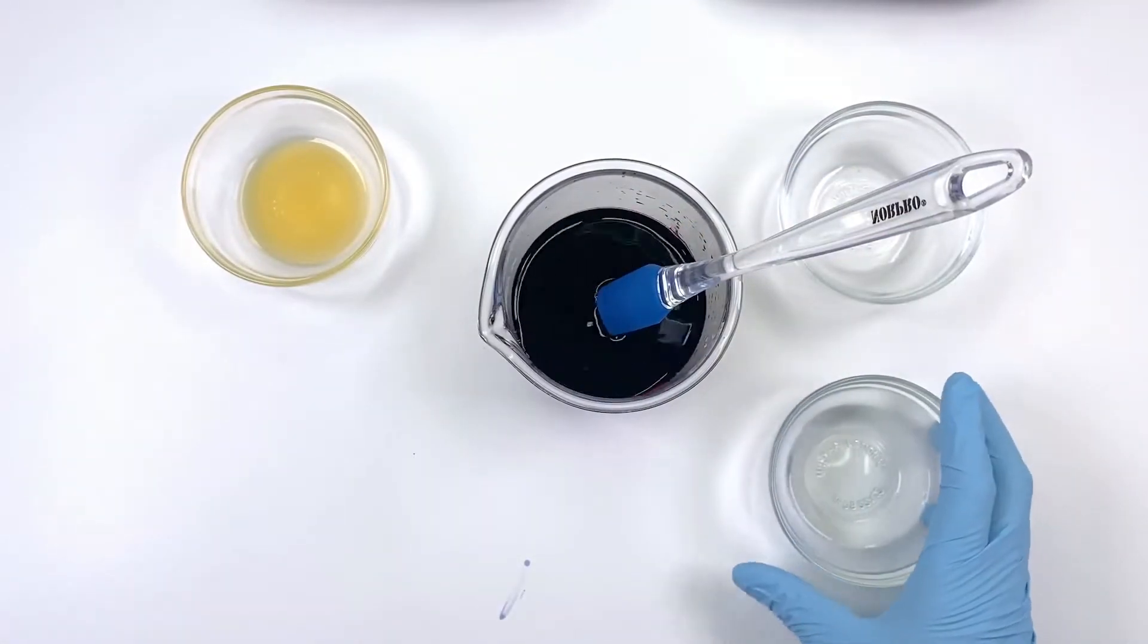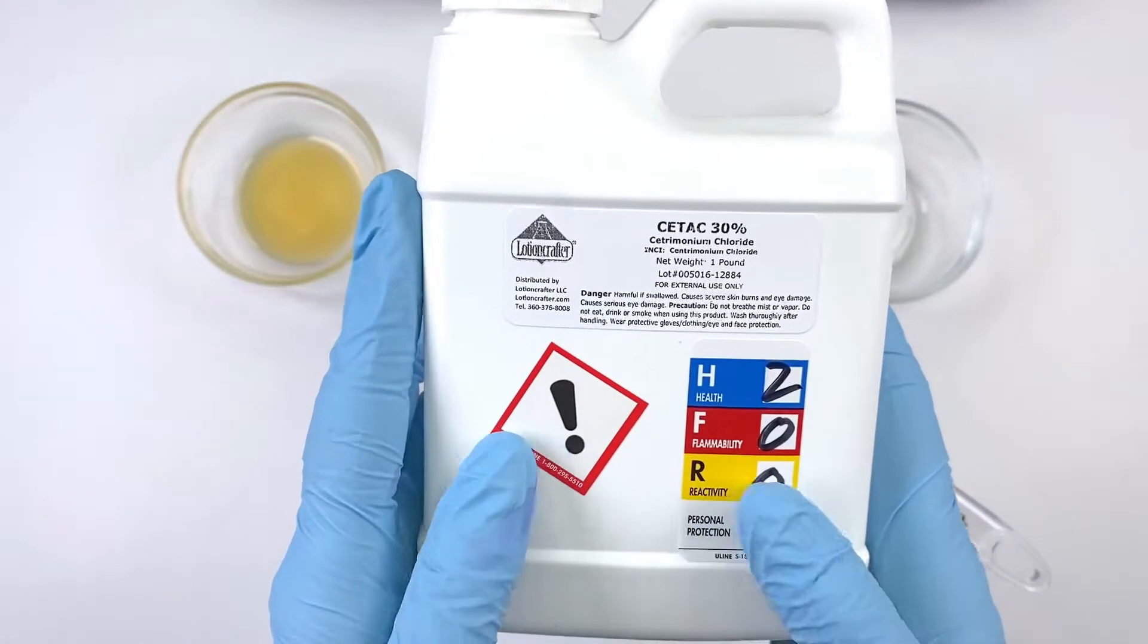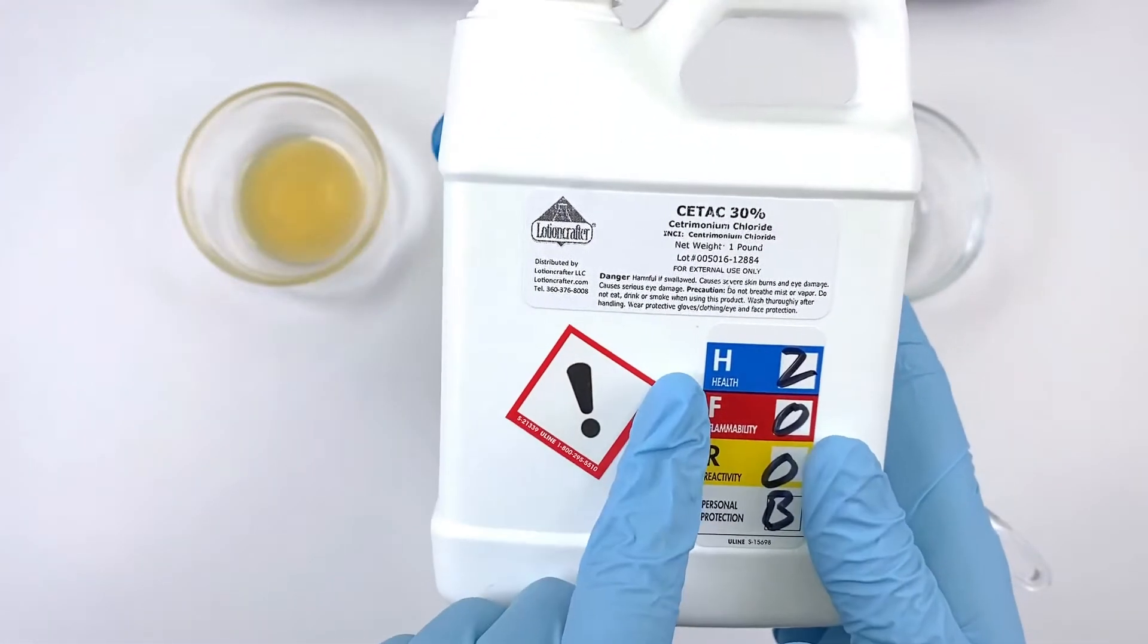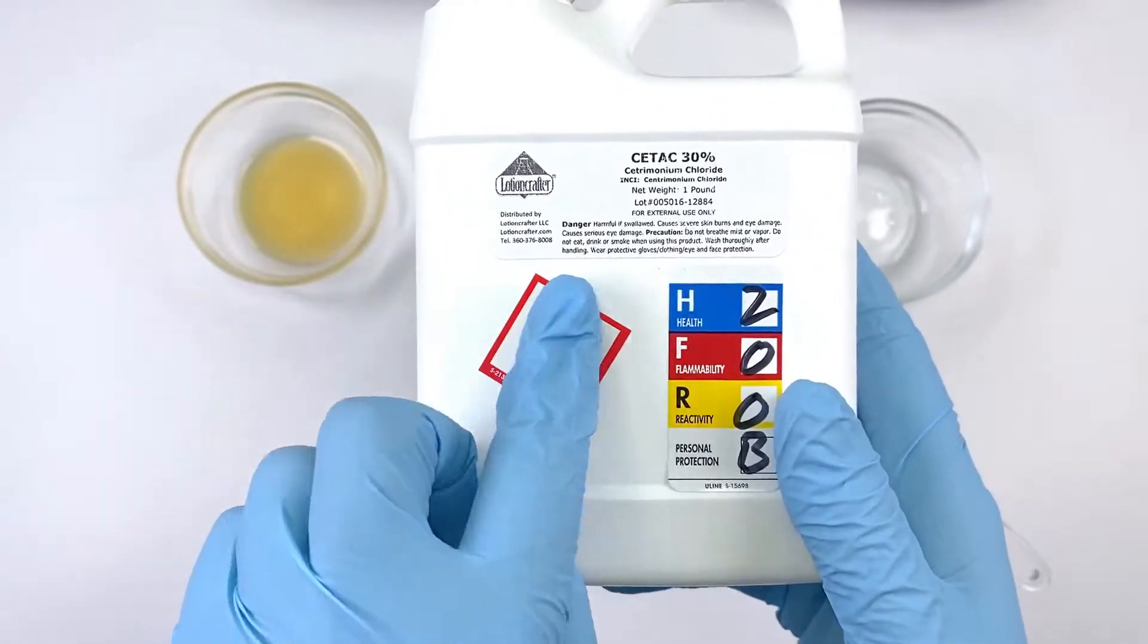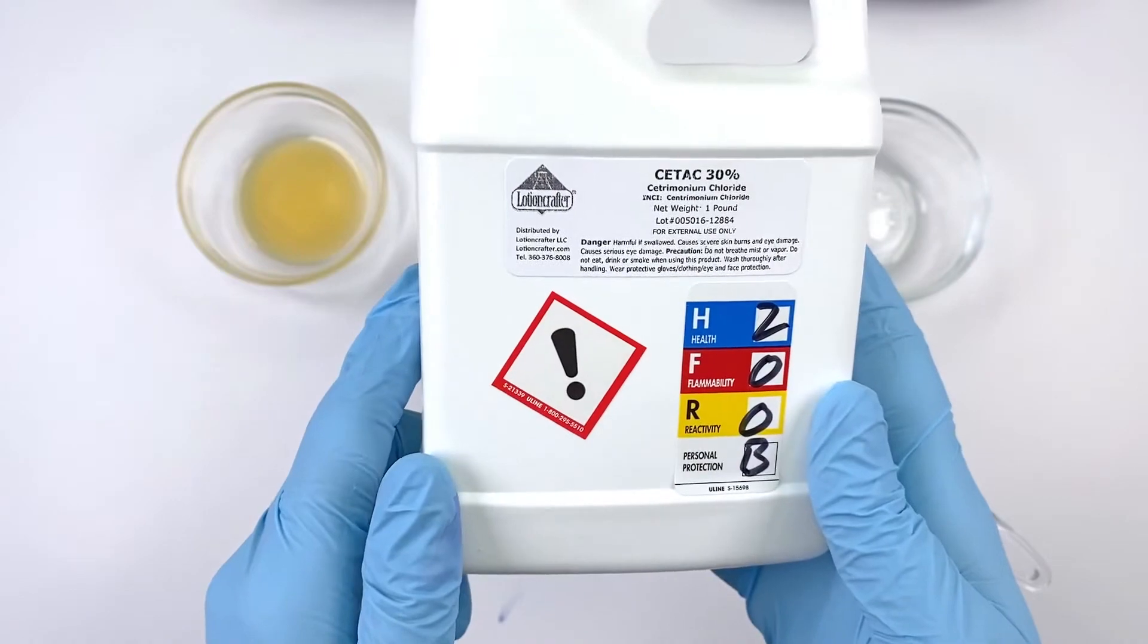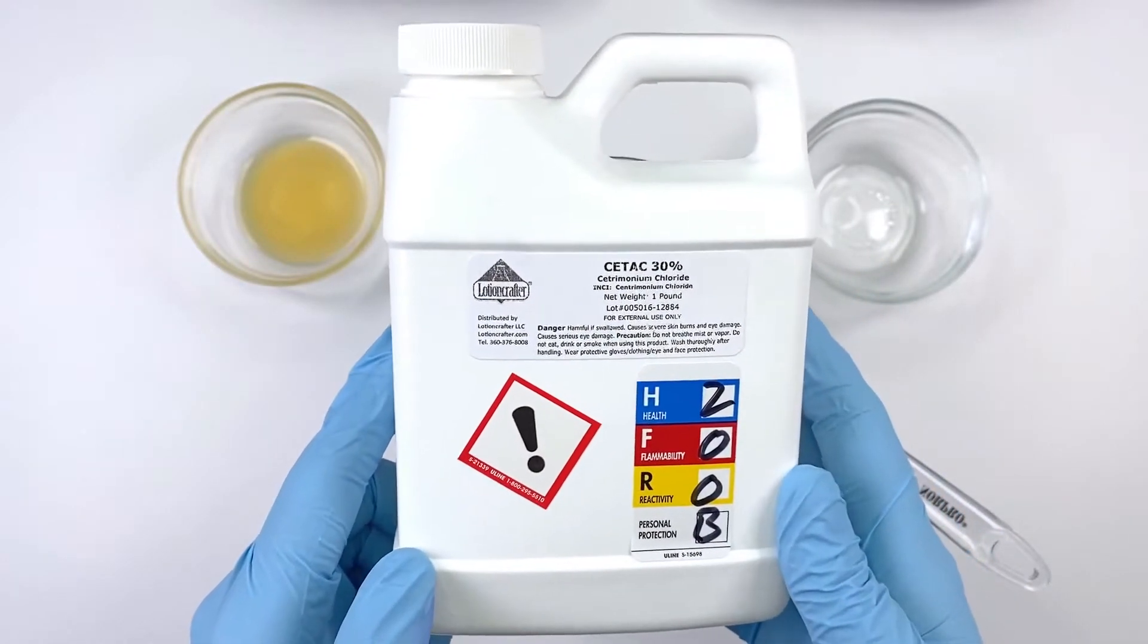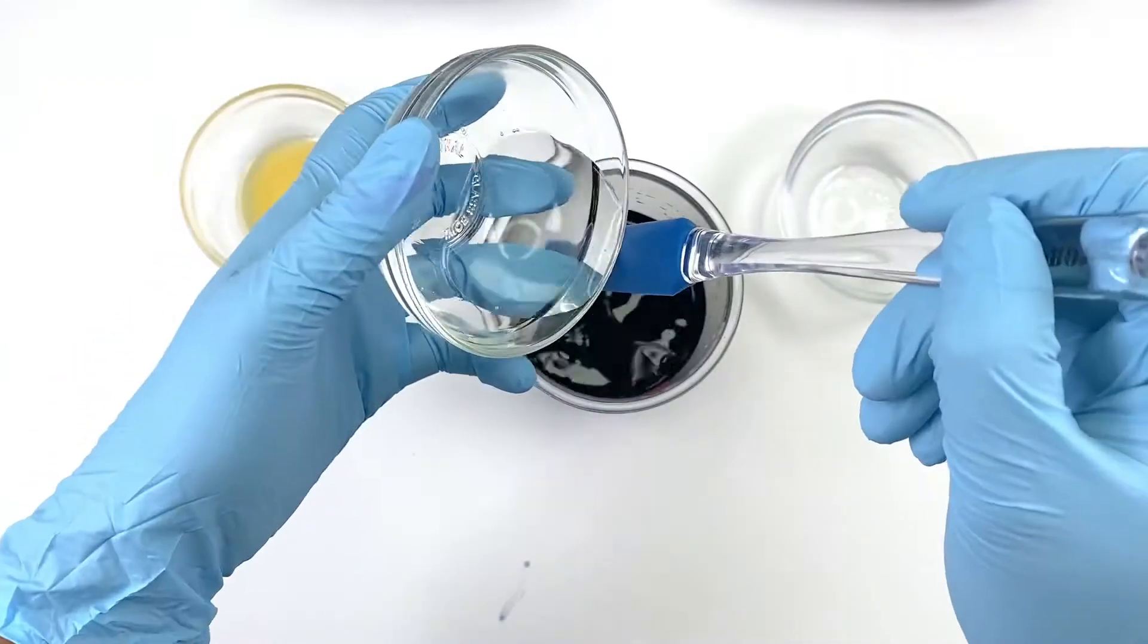This next ingredient I really want to discuss. It's a conditioning agent called cetrimonium chloride. This is a cationic ingredient. Our hair is negatively charged due to heat and damage and constant friction. What you want is a cationic, which is a positively charged ingredient that basically improves the static electricity found in your hair. There is 18.16 grams of this inside of there.